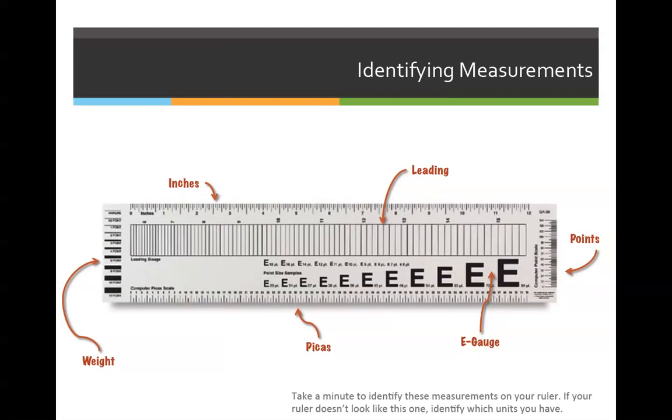Last but not least, before we leave the typesetter ruler, let's identify where things would be. Since this is a very typical typesetter's ruler, it is the one that you should purchase if you take Art 1135, the printing class and that kind of stuff. I'm going to start left to right. Left to right is a weight, and the weight is the thickness or the measure of a line.